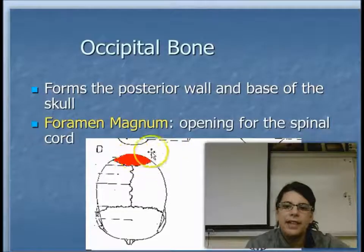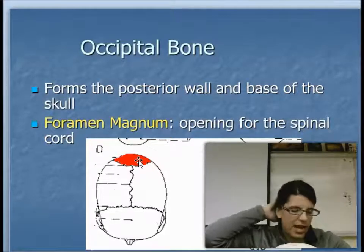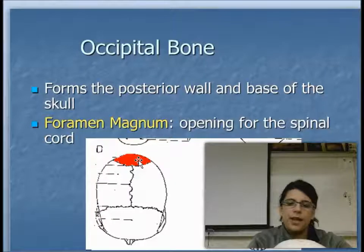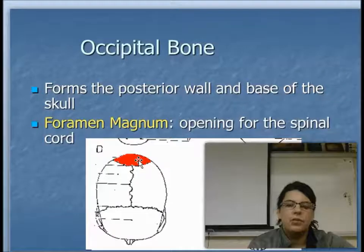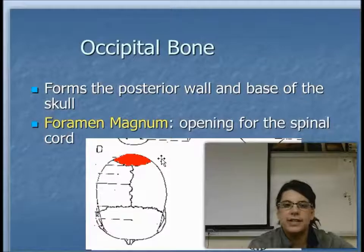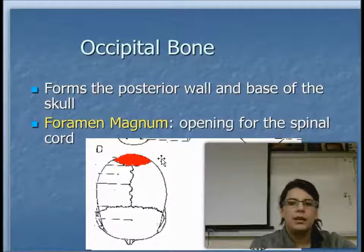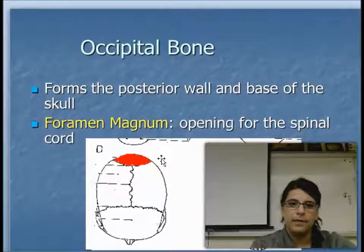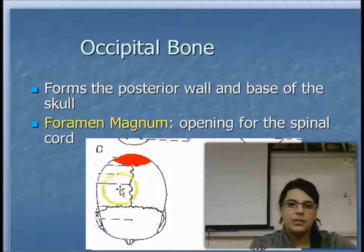Moving to the back of the head is the occipital bone, which is going to form the very posterior wall and the base of the skull — the very back of your head. There's an opening in the occipital bone called the foramen magnum. Foramen is just a fancy word for an opening or a hole. This is basically the opening where your spinal cord will connect to your brain stem. The occipital bone is connected to the two parietal bones by the lambdoidal suture.